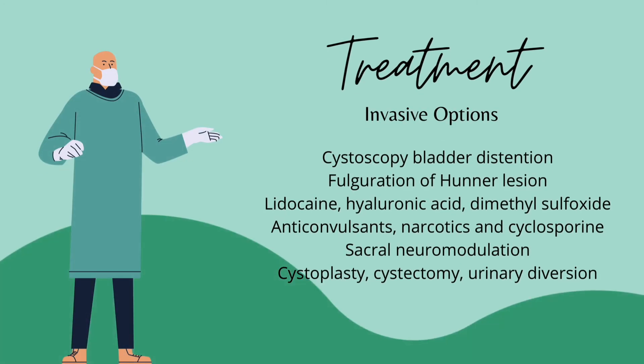Invasive treatment options are also available, such as cystoscopy bladder distension, fulguration of the Hunner lesion, lidocaine, hyaluronic acid, and dimethyl sulfoxide. Anticonvulsants, narcotics, and cyclosporine medications can be given. Sacral neuromodulation can be used for the pain. Cystoplasty, cystectomy, and urinary diversion are the extreme measures. As with medications, it is important to discuss the pros and cons of these treatment options with the patient.